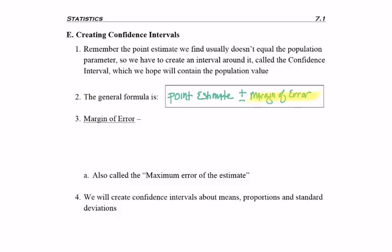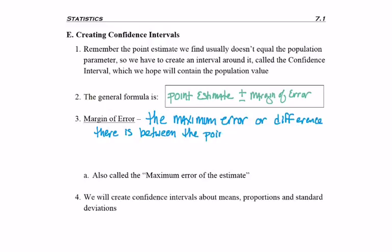So now let's define margin of error. It's the maximum error or basically the difference there is between the point estimate and the true population parameter. So it's the most you're willing to be off by. It's the maximum error. And so sometimes you'll actually hear it called the maximum error of the estimate.